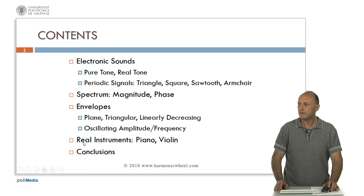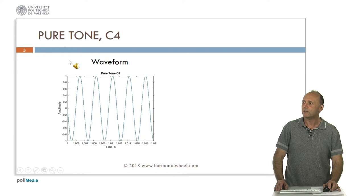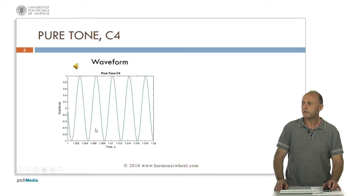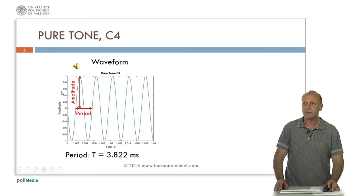Then we will show the spectra of real instruments such as the piano and violin, and we will finish with some conclusions. This is the pure tone for C4. This is the sound. It has been represented on a time axis. This is the waveform. Its length is called period. For a C4 it is 3.8 milliseconds. The amplitude is here normalized from minus 1 to plus 1.